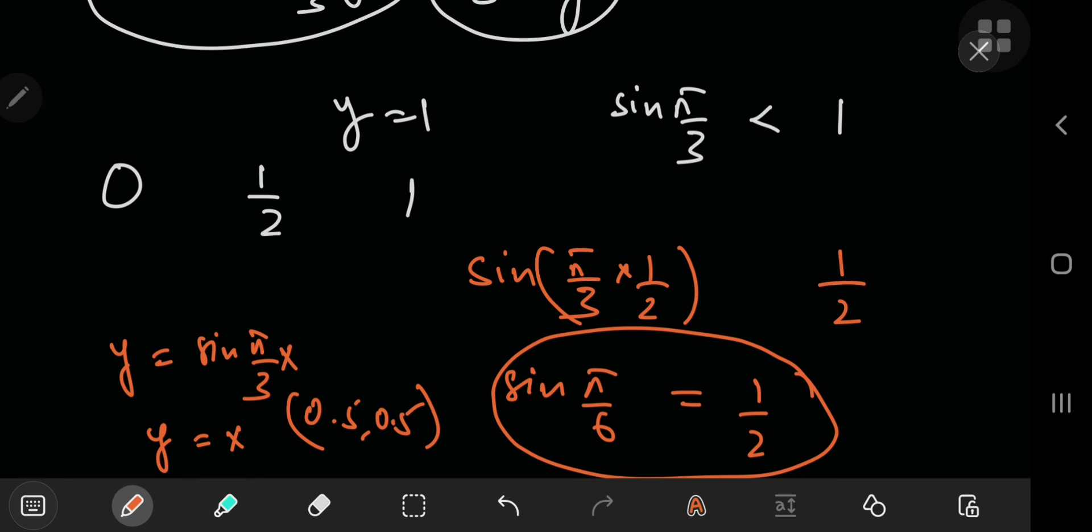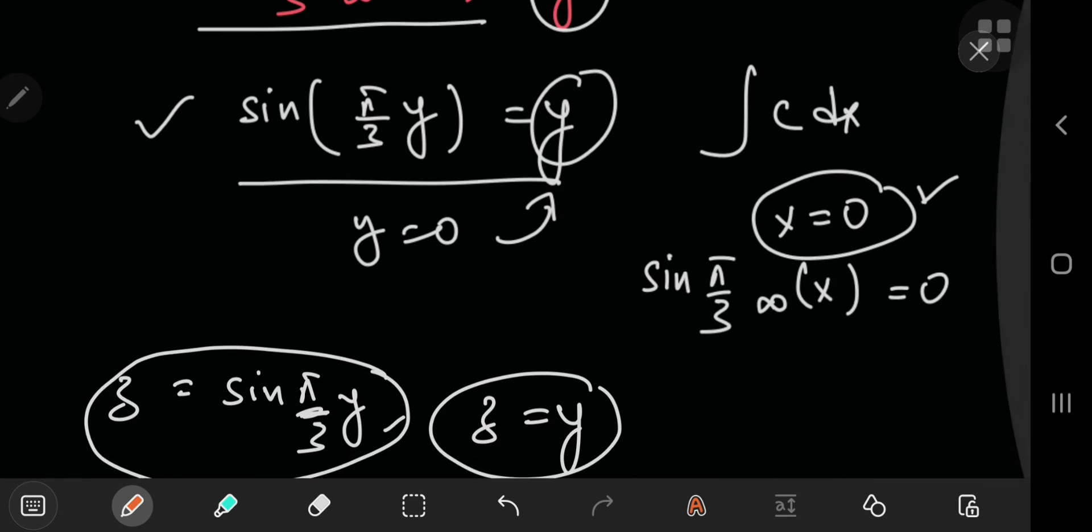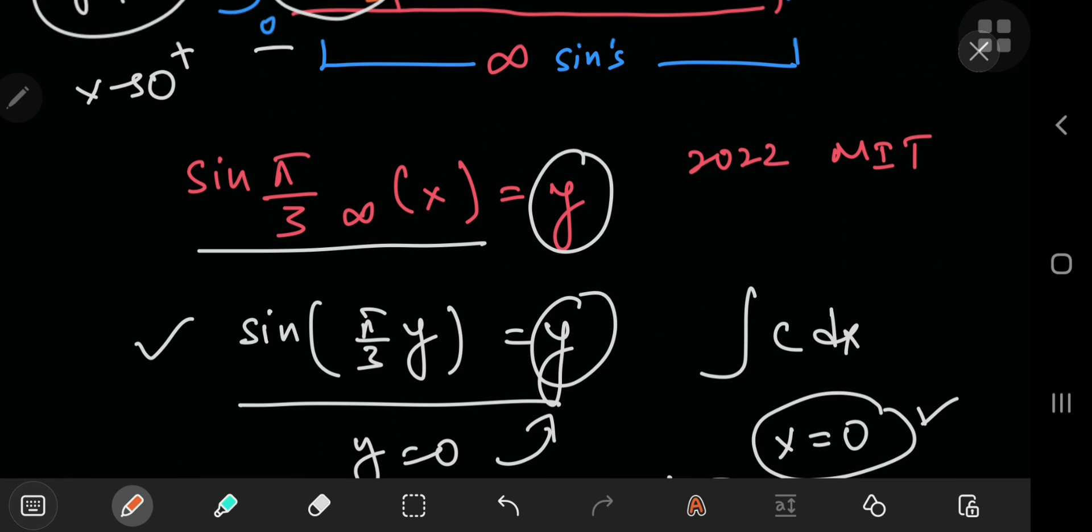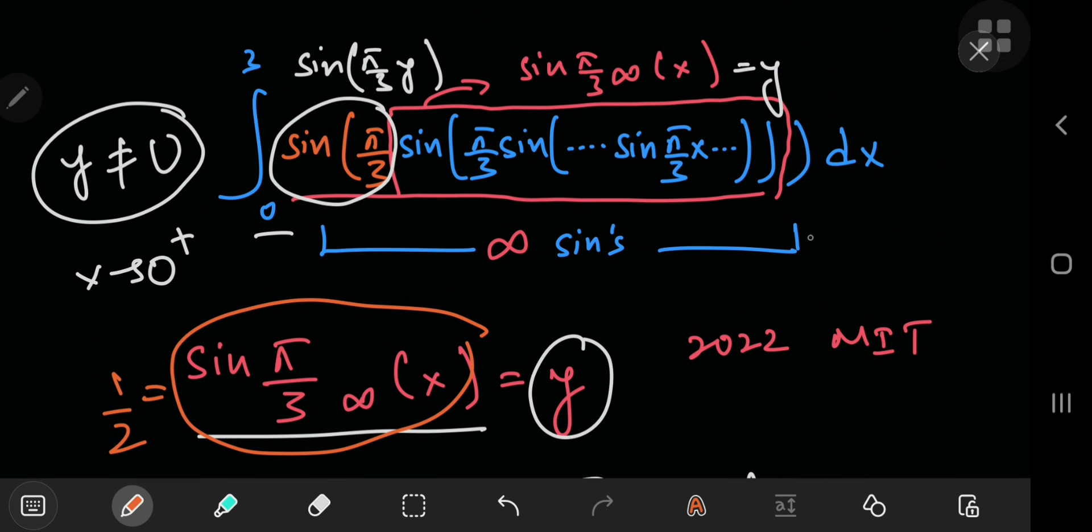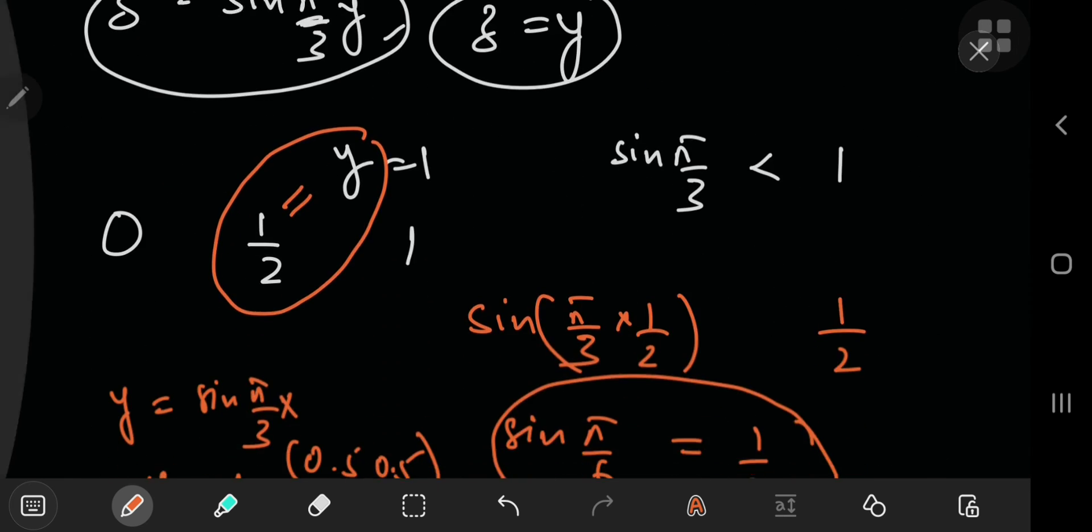And honestly, I still cannot believe my luck. So the solution to your equation is y equals 1/2. So that means all of this is just 1/2. So what you're doing here is you're just integrating 1/2 with respect to x from zero to three.